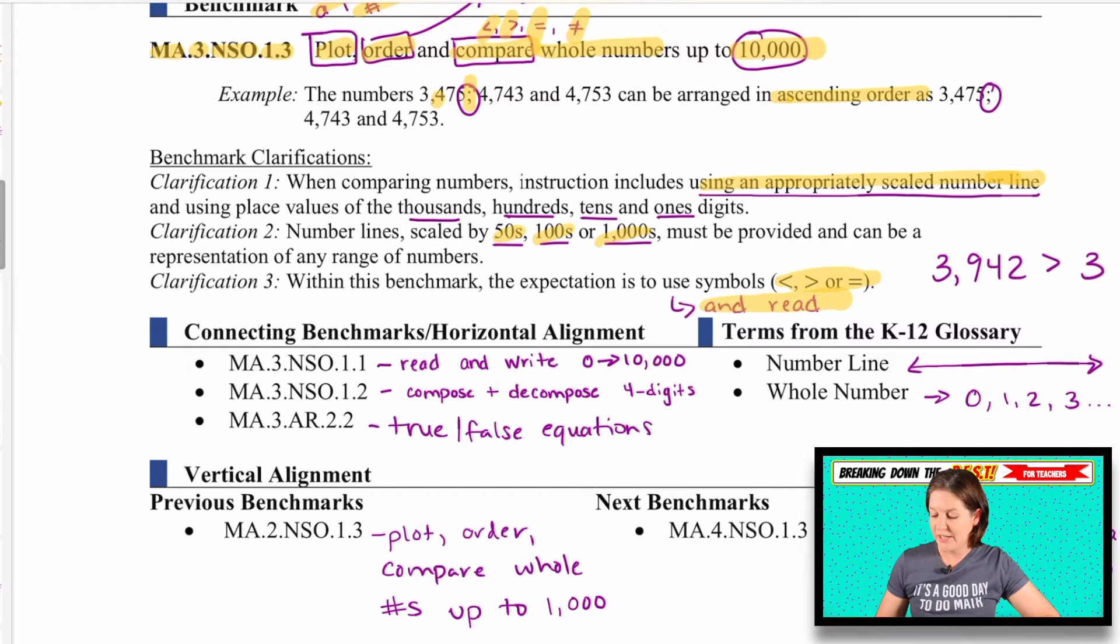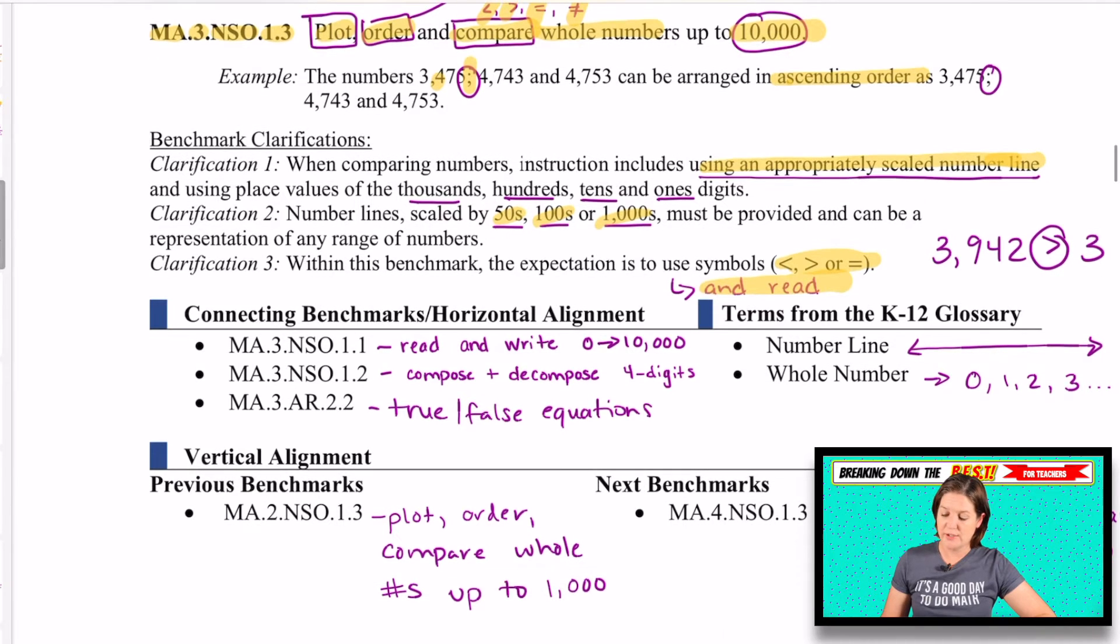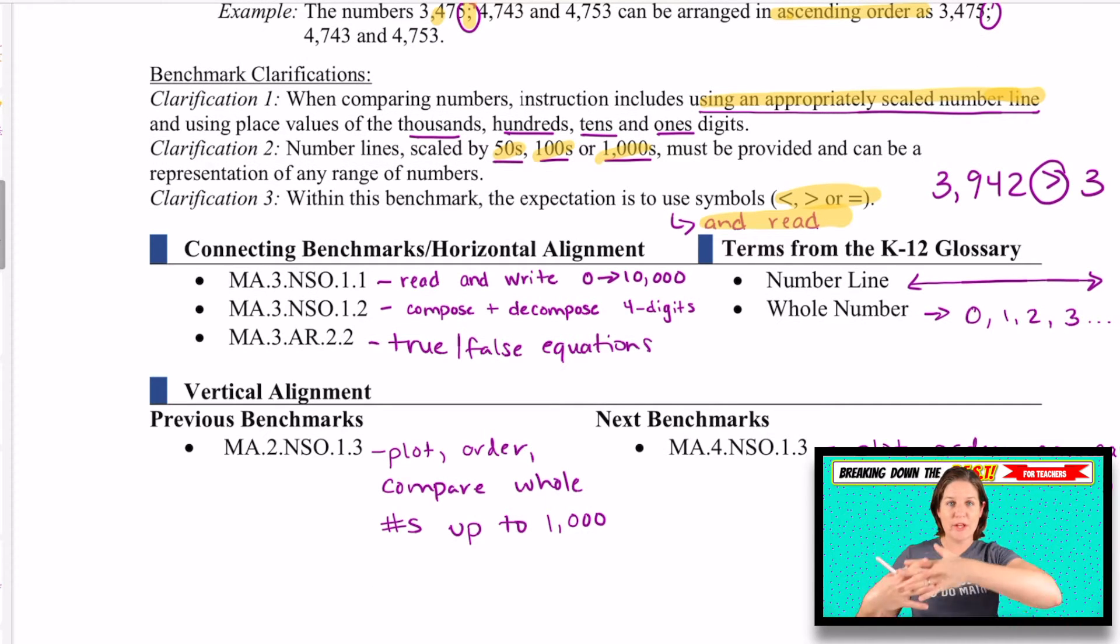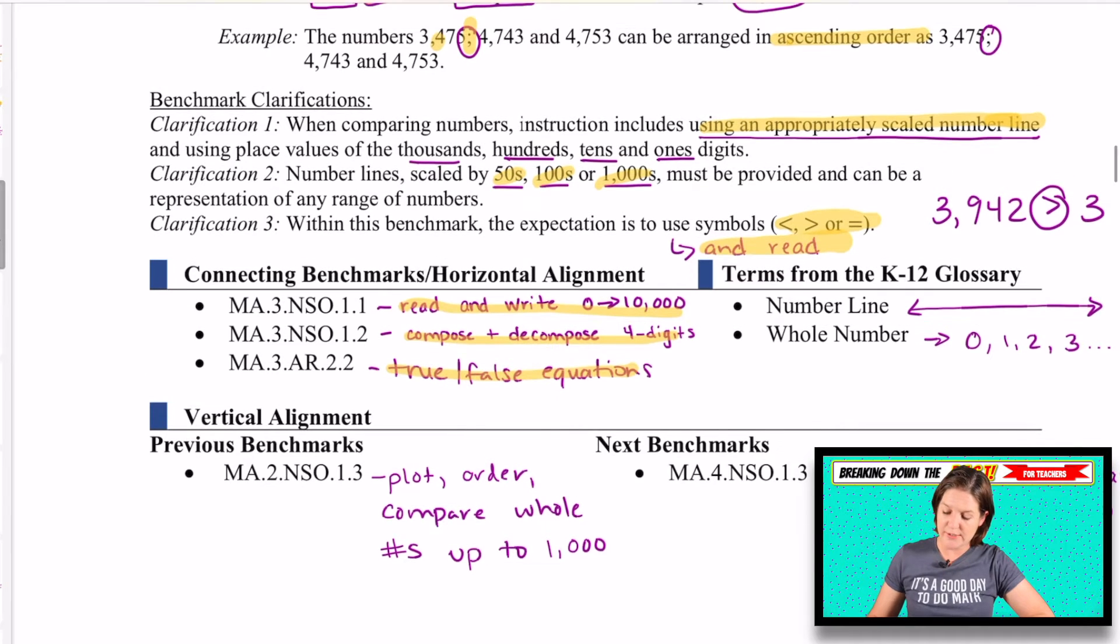Not just to throw a symbol there, but to be able to read it from left to right. For instance, being able to read it saying 3,942 is greater than three. Students need to be able to read it across. That shows that they understand it.